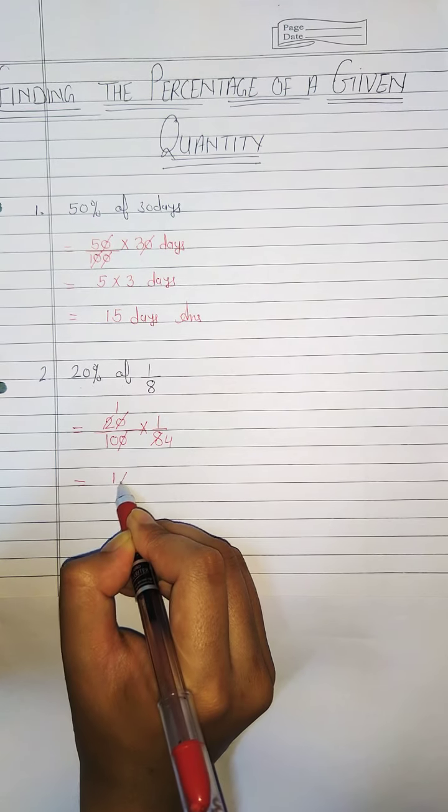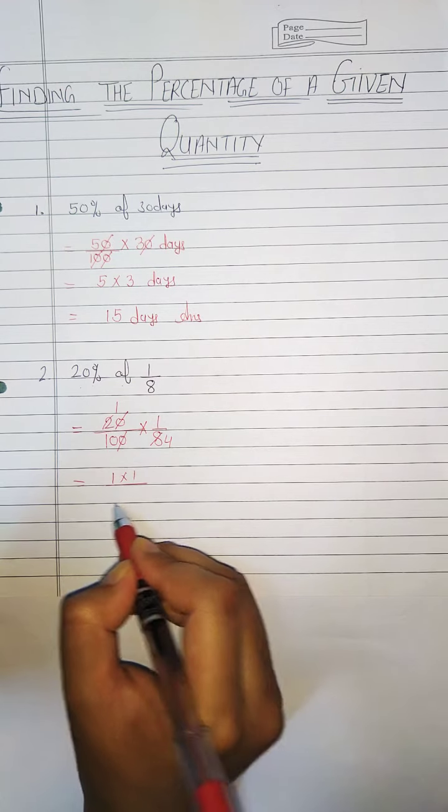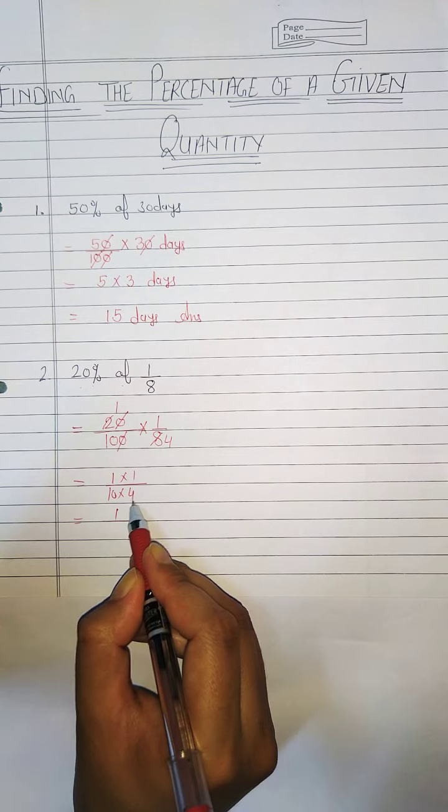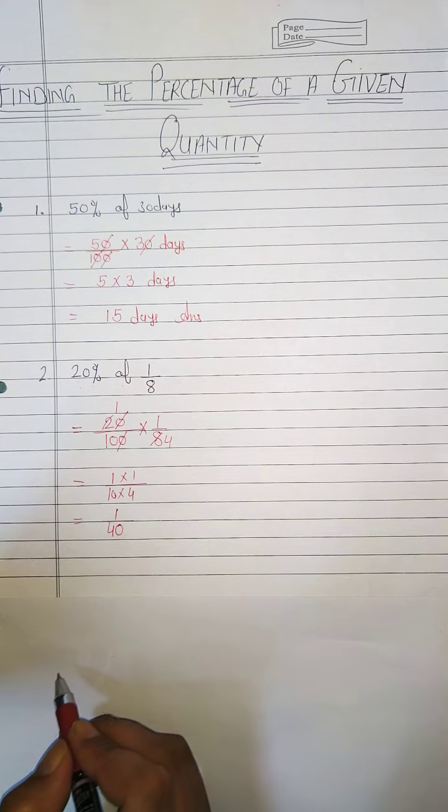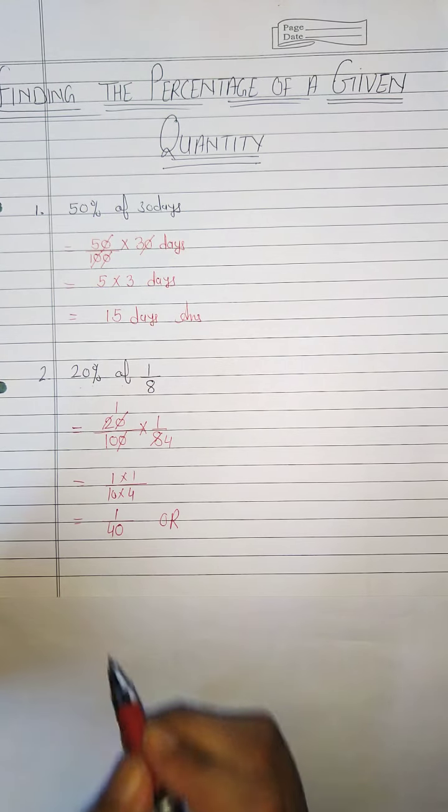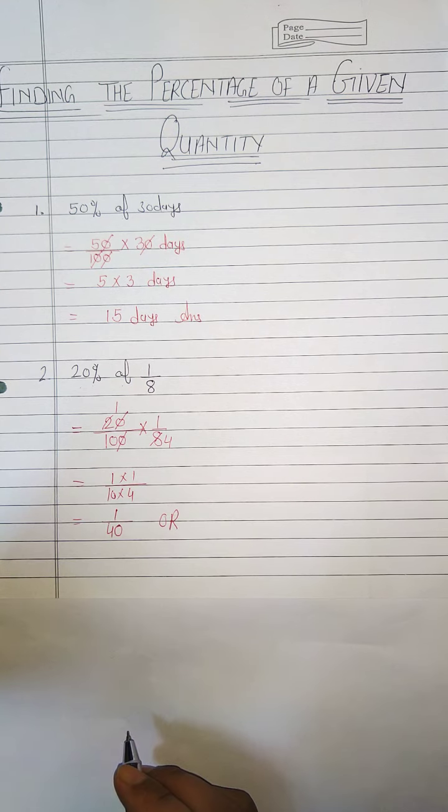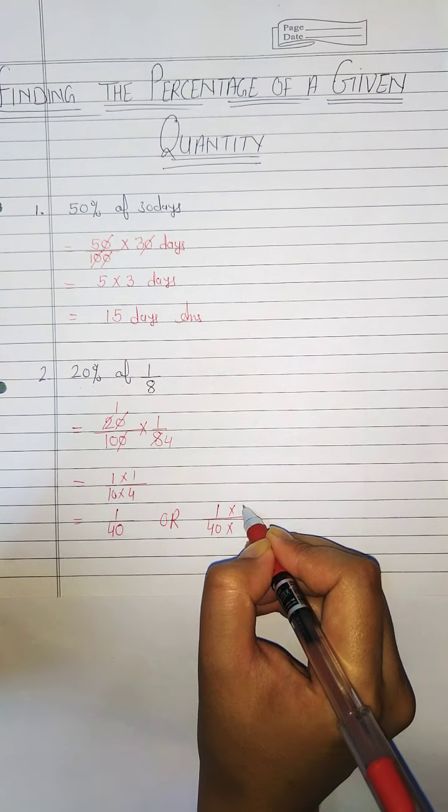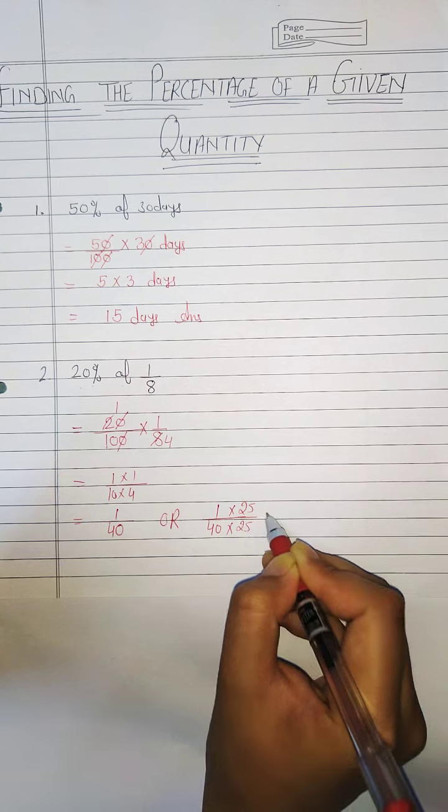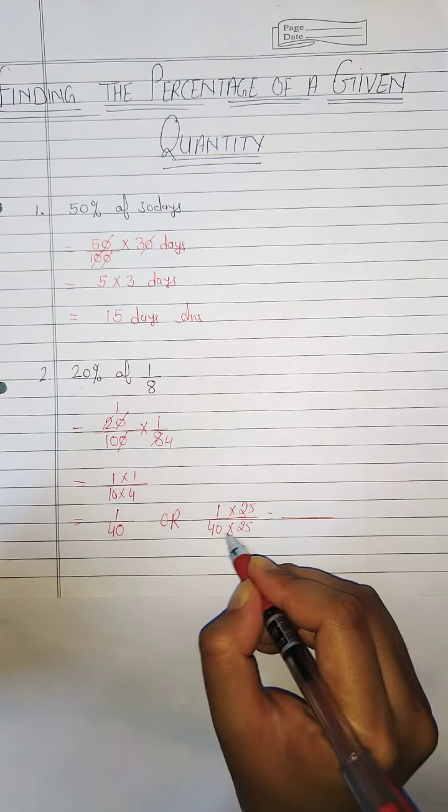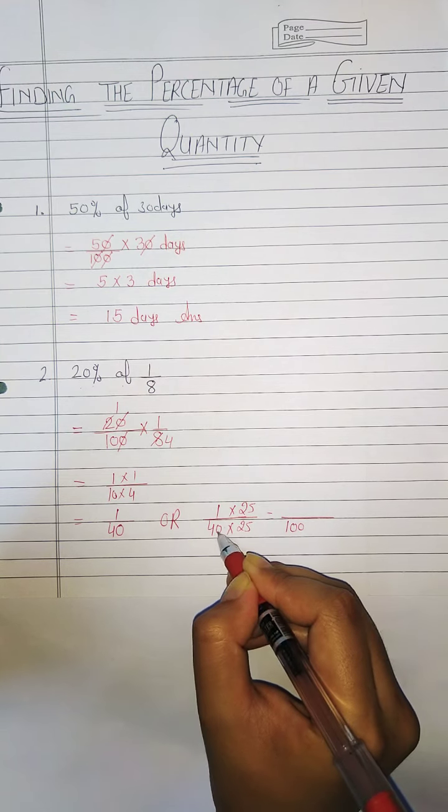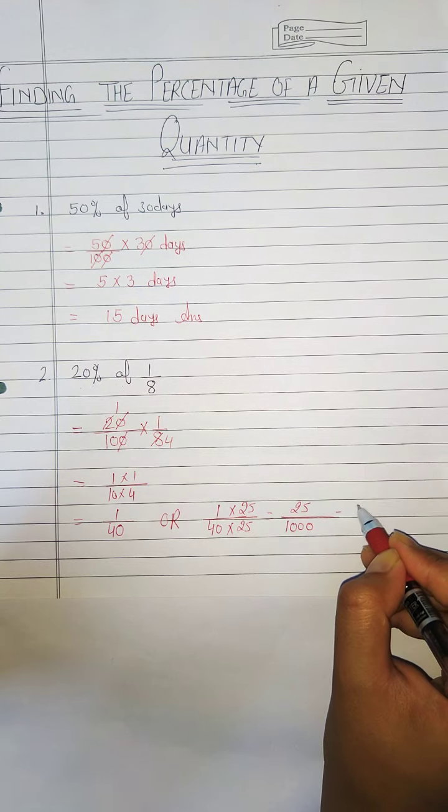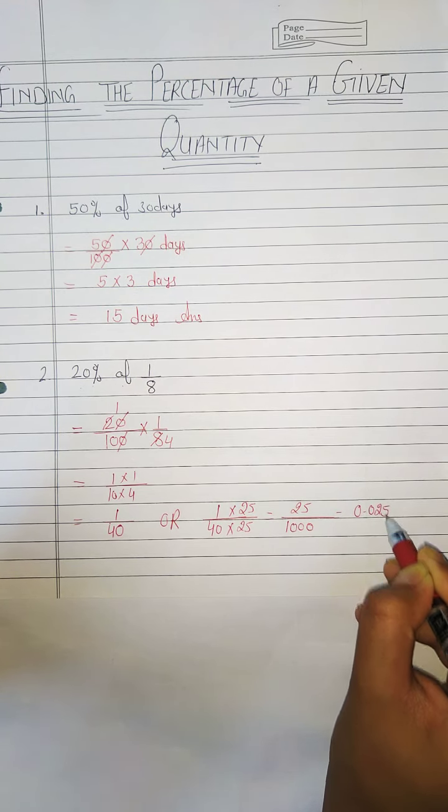In numerator we have 1 into 1 and in denominator we have 10 into 4. 1 into 1 is 1 and 10 4s are 40. Or we can write this fraction answer in decimal. We can multiply both numerator and denominator by 25. So that we get 25 4s are 100 and there is one more zero. So this is 25. Now we can write this answer in decimal also.